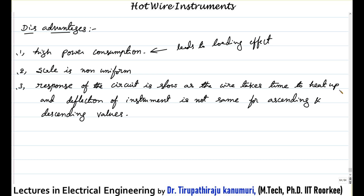Similarly, when decreasing the current, the wire takes time to cool down and return to its original position. The deflection of the instrument is not the same for ascending and descending current values — the response is lethargic, meaning very slow. When the current is changed, you have to wait before measuring. Because of high power consumption and slow response, these instruments are not used in practice nowadays.